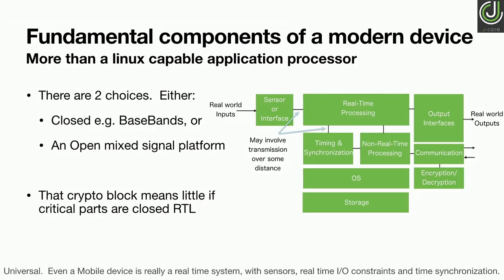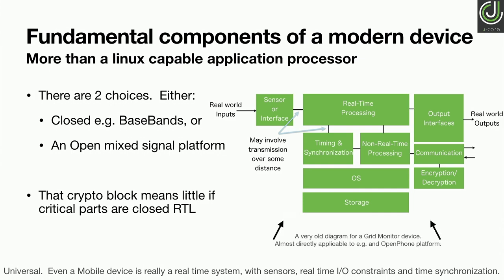What does a modern device look like? Sensor inputs — analog-to-digital converters, radios — then real-time processing that talks to the radio, and output interfaces which are also analog and real-world. This integrated flow drives the process node you choose and the hardware you build. Below that is non-real-time processing from Linux, the OS, and storage. Encryption and decryption are also critical — just about every system we build needs to be secure. But if there are closed-source parts you don't control, encryption doesn't give you true security. An open system is very important.